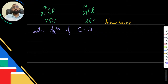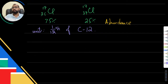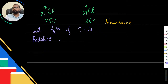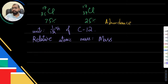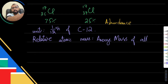We need to know that the unit is one twelfth of carbon-12. So, relative atomic mass is technically the average mass of all the isotopes — specifically all naturally occurring isotopes. If a new isotope is artificially created, it would not be included; only naturally occurring isotopes count.